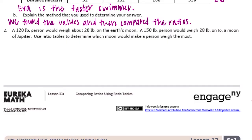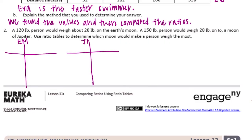A 150-pound person would weigh 28 pounds on Io, a moon of Jupiter. Use ratio tables to determine which moon would make a person weigh the most. Let's start with Earth's moon and call it Earth's moon, and this one will be Jupiter's moon. A 120-pound person would weigh 20 pounds on Earth's moon.